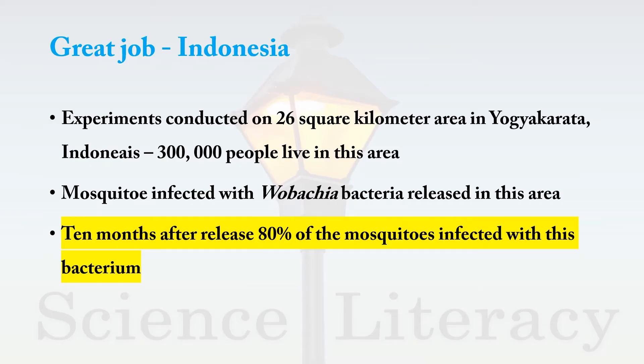Here is an interesting study performed in Indonesia. First, dengue-transmitting mosquitoes were infected with bacteria in the laboratory and then released into a 26-square-kilometer area. Within 10 months, almost 80 percent of mosquitoes in that area had acquired an infection with the bacteria.